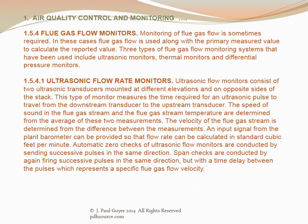Ultrasonic flow monitors consist of two ultrasonic transducers mounted at different elevations and on opposite sides of the stack. This type of monitor measures the time required for an ultrasonic pulse to travel from the downstream transducer to the upstream transducer. The speed of sound in the flue gas stream and the stream temperature are determined from the average of these two measurements, and the velocity is determined from the difference. An input signal from the plant barometer can be provided so that flue flow rate can be calculated in standard cubic feet per minute. Automatic zero checks are conducted by sending successive pulses in the same direction; span checks are conducted similarly but with a time delay representing a specific flue gas flow velocity.